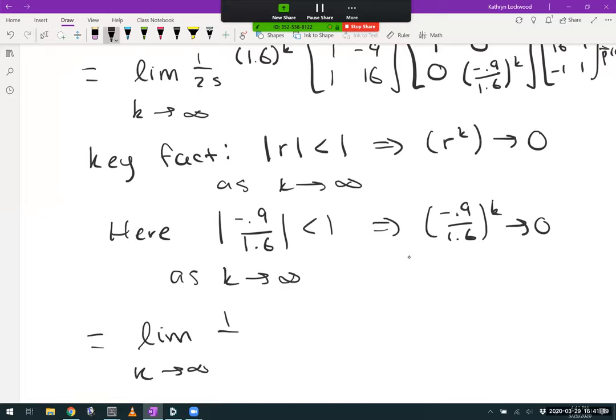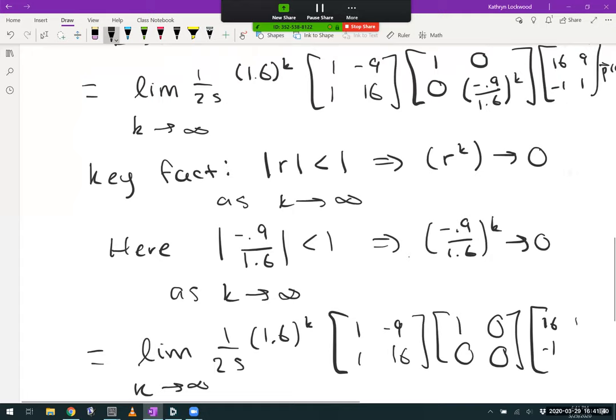Let's do that now. Out front, we still have a factor 1.6 to the k. The diagonal matrix becomes [1, 0; 0, 0], letting that term tend to 0 as k gets really large. And then everything else again is untouched at this point in time.